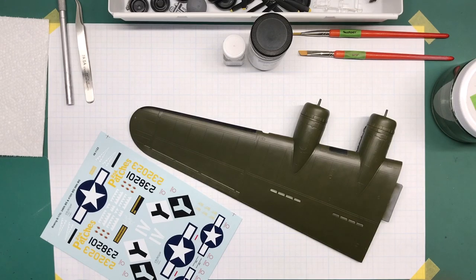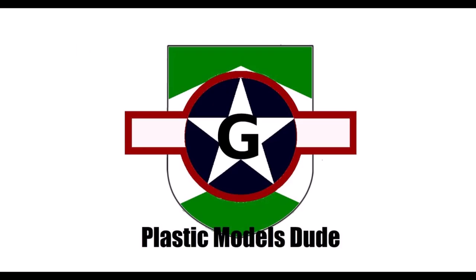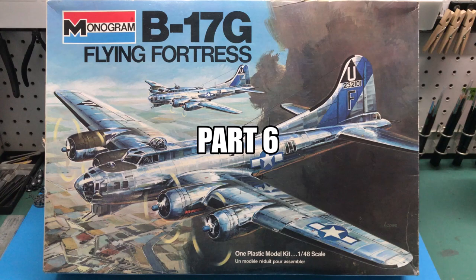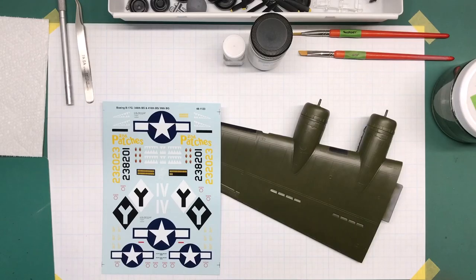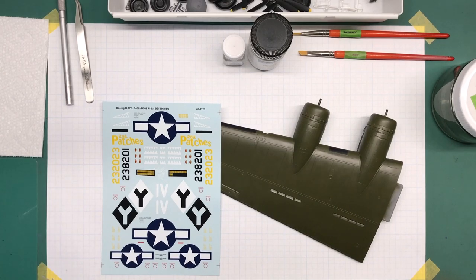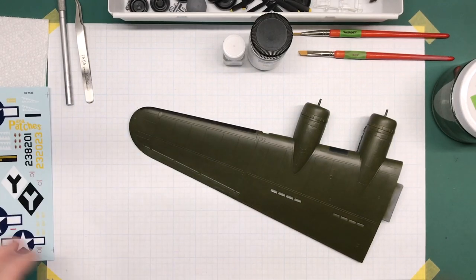Time for some decals. Hello and welcome back to Plastic Models by Regular Dude and part number six of the Monogram 1/48th scale B-17G for the Chatterbox Attack/Bomber Aircraft Group Build. And after all these videos, it's not getting any easier to say all that. So here we are. As you can see, I am ready to start decals, but let's do a quick recap.